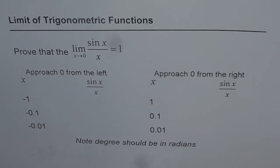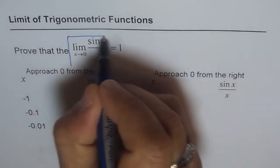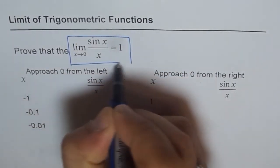Let us see how to find limit of trigonometric functions. Here is the fundamental limit. We need to prove that the limit of sin x over x when x approaches 0 is 1.